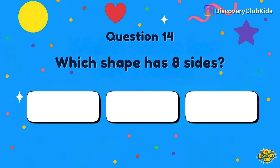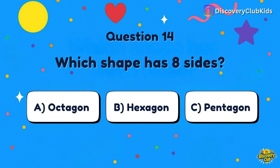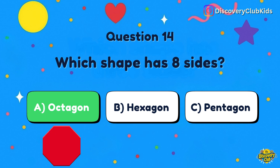Question number 14: Which shape has eight sides? Your choices are octagon, hexagon, or pentagon. The correct answer is octagon.